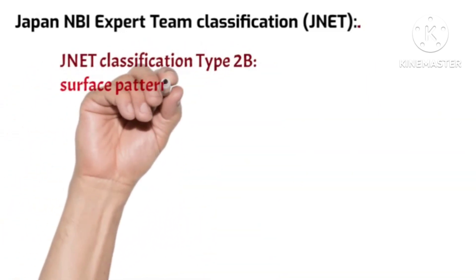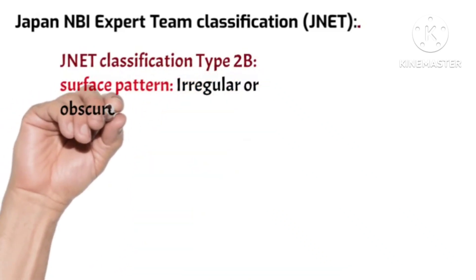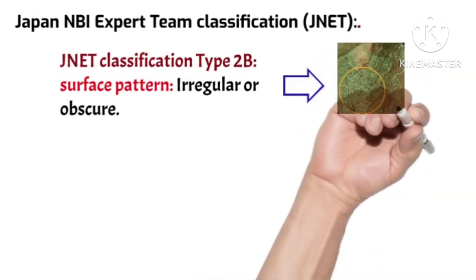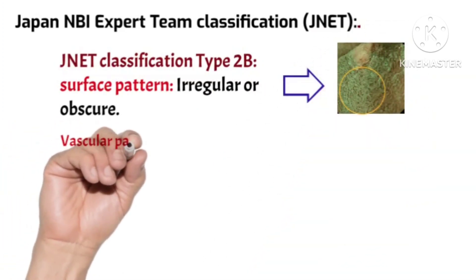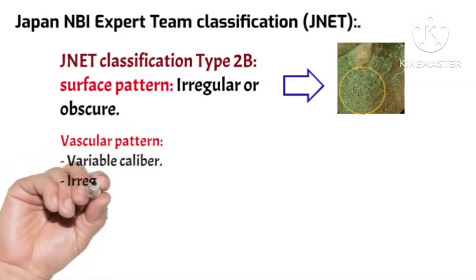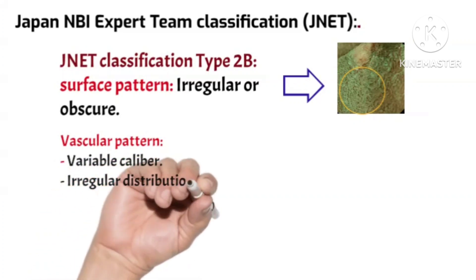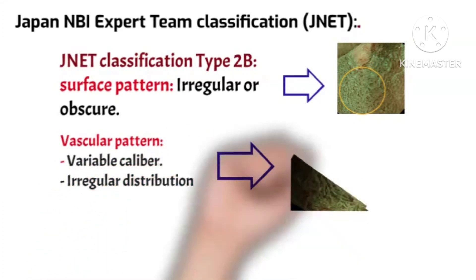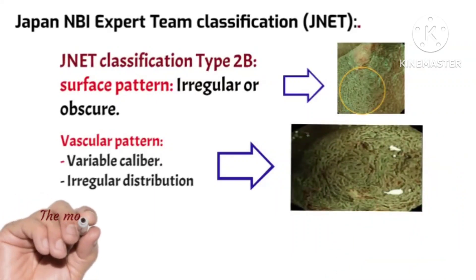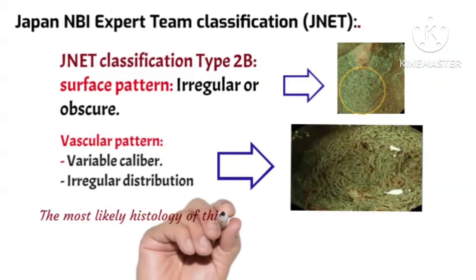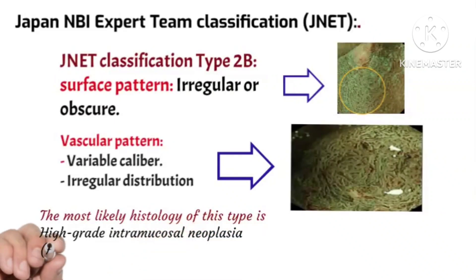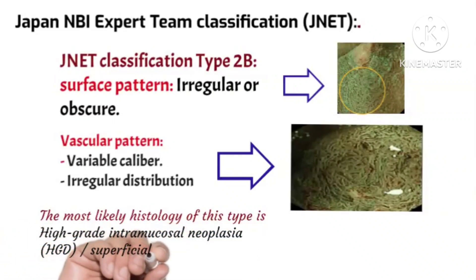JNET classification Type 2B shows a surface pattern that is irregular or obscure, and the vascular pattern shows variable caliber and irregular distribution of blood vessels. The most likely histology of this type is high-grade intramucosal neoplasia or superficial submucosal invasive cancer.